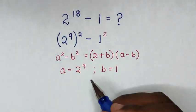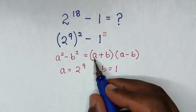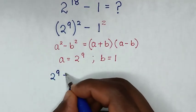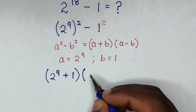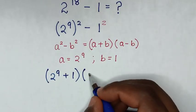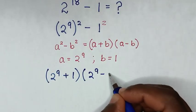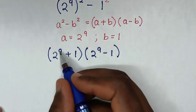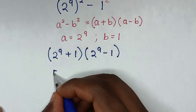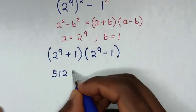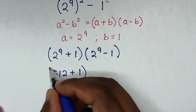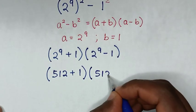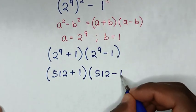From here we'll apply this form: a plus b gives 2 power 9 plus 1, bracket, then times a minus b which gives 2 power 9 minus 1, bracket. In the next step, 2 power 9 is the same as 512, so we get 512 plus 1, bracket, times 512 minus 1, bracket.